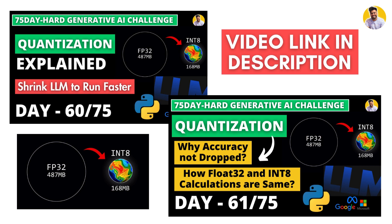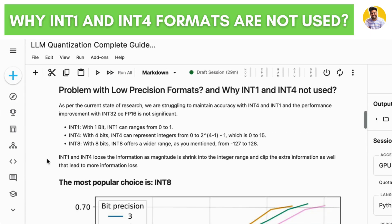The main problem with low-precision formats is that their range is too small, and with that small range most of the information gets lost or gets lost in the clipping process. As you can see on screen, INT1 with 1 bit has a range of 0 to 1, and INT4 has a range of 0 to 15. With these two precision formats, you can't capture the direction a value goes or how strongly it goes in a given direction.